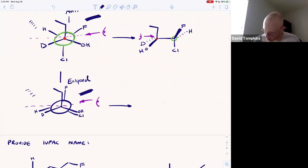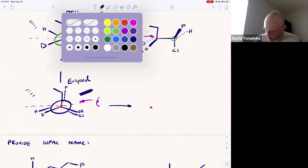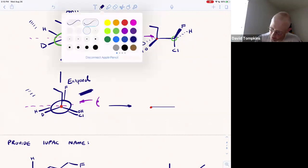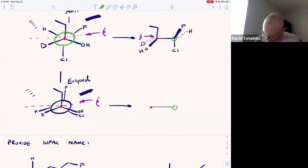When producing the Newman projection, the front carbon is coming out of the page or to the left of the eyeball. We view this horizontal bond where the back carbon is going into the page or to the right of the eyeball.